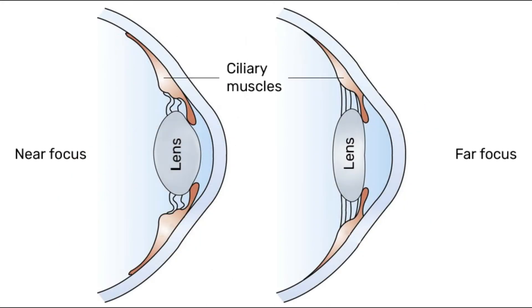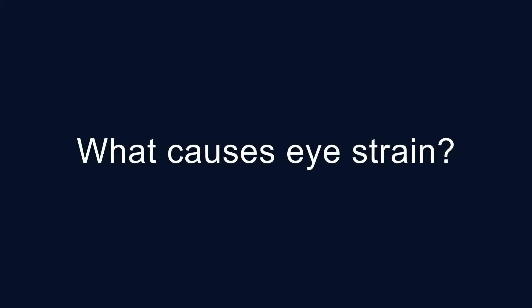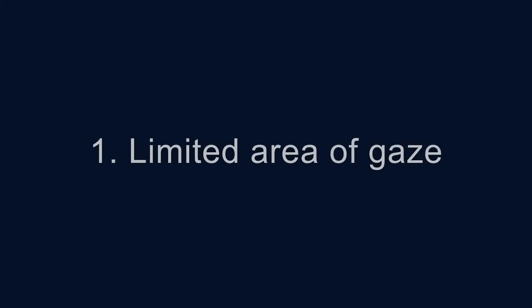On the inside of your eyes, the ciliary muscles are involved in the contraction and relaxation of the lens to allow you to focus on something near or far. When you look at something far away, these muscles relax. When you look at something near you, these muscles need to contract. Most gaming monitors are 20 to 24 inches away.